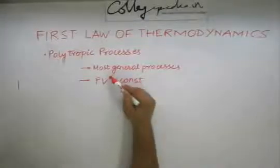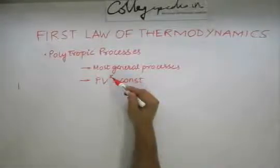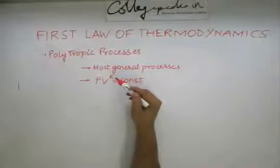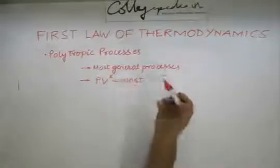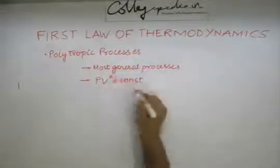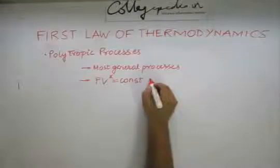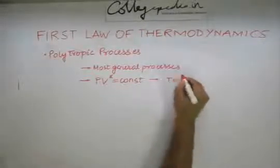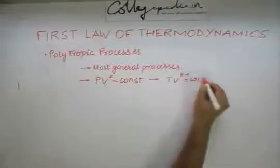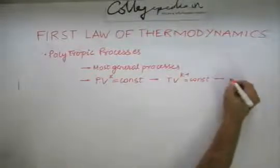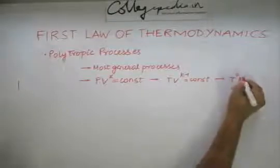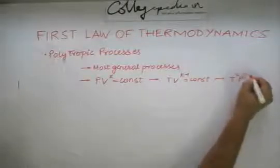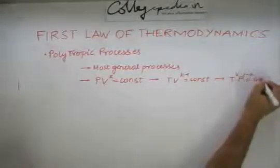In an adiabatic process, this k gets replaced with gamma. We also have tv to the power k minus 1 as constant, and t to the power k into p to the power 1 minus k as a constant as well.